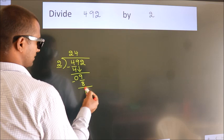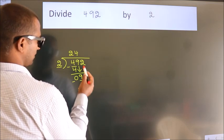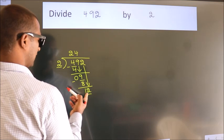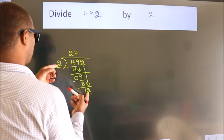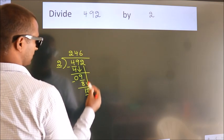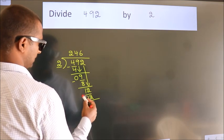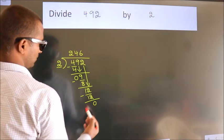After this, bring down the next number. 2 comes down, making 12. When do we get 12? In the 2 table, 2 6s are 12. Now we subtract. We get 0.